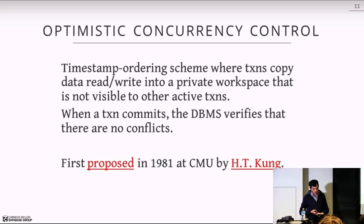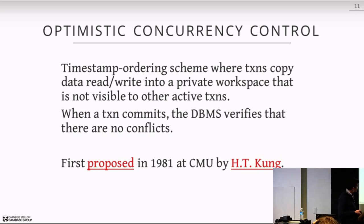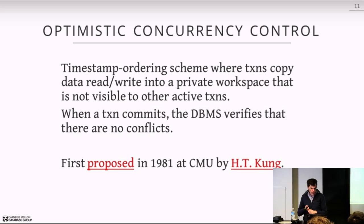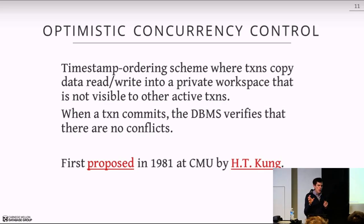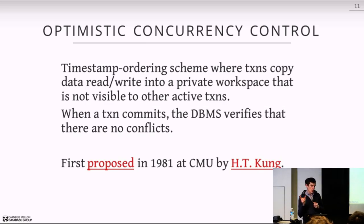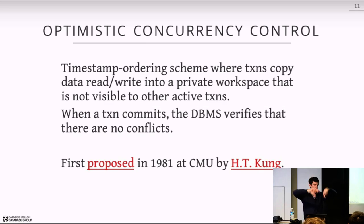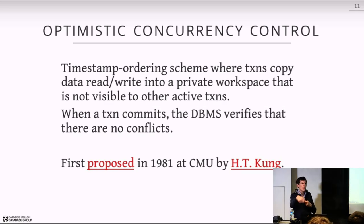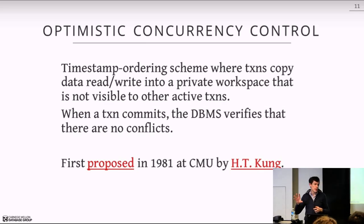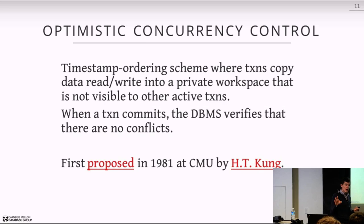Now we'll start talking about optimistic concurrency control, another timestamp ordering scheme and the last one we'll discuss. The main idea of how it differs from MVCC is that we're not going to maintain multiple versions in a global database. Instead, we maintain multiple versions in private workspaces for each transaction that are not visible to any other transaction. In MVCC, when you modified a tuple, you'd copy it and make a new version, and other transactions could read that version. In OCC, we do all our changes in a private workspace.